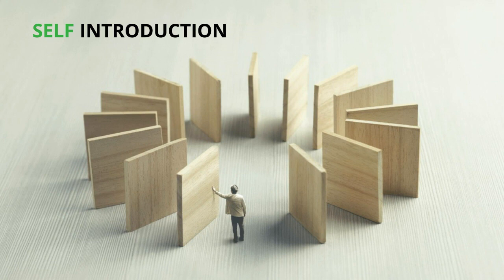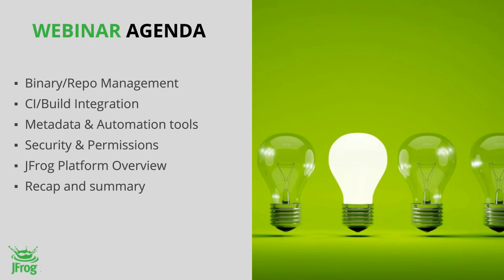A couple of things I want to go through: from an agenda perspective, we're going to be talking about binary and repo management. We'll get into CI build integration and I'll show you a demo using Jenkins. Then I'll talk about the power of metadata, and we'll get into the security permission model for Artifactory, which gives you fine-grained control over who has access to what. At the end, we'll do a quick overview of our JFrog platform, and finally a recap, summary, and survey.